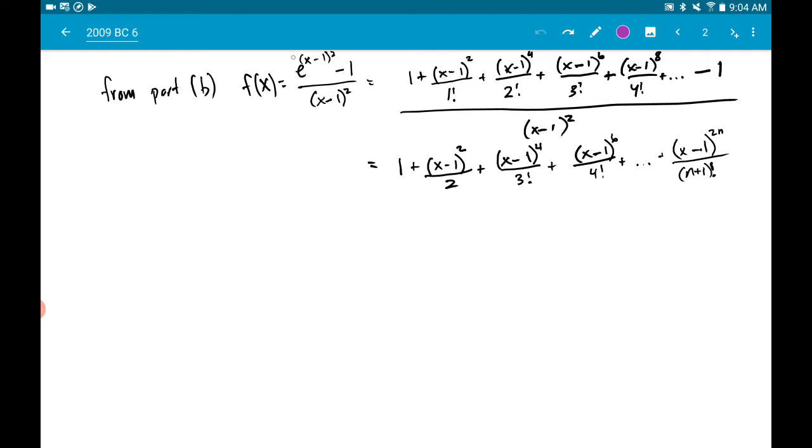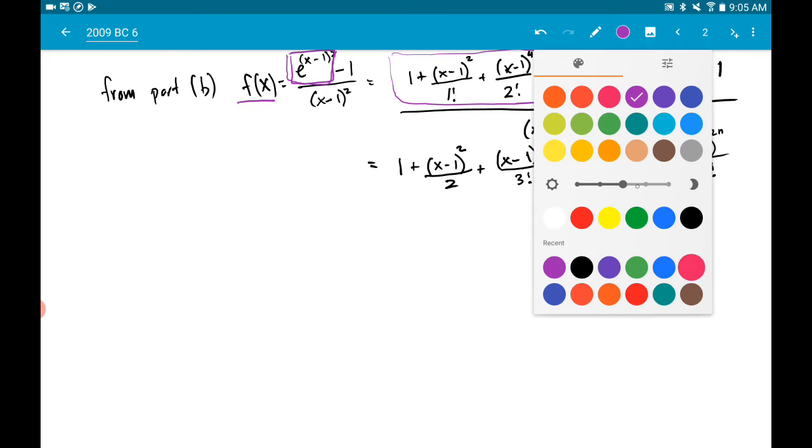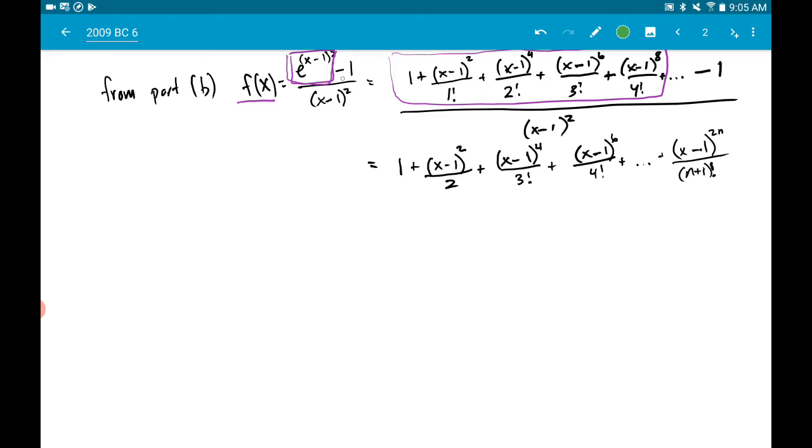So if you forgot what it's asking, part A asks you to find a Taylor series for this. You can just take the argument and substitute it into the Taylor series for e to the x. Then letter B asks you to find this Taylor series for f(x), which involves this part A. So that purple box represents this series here.